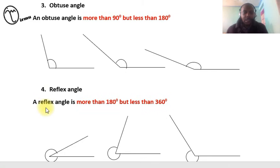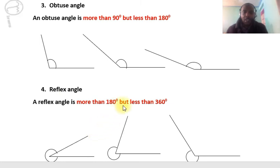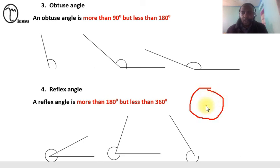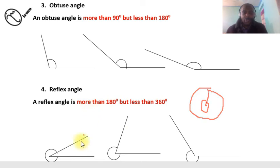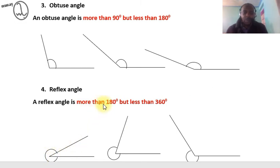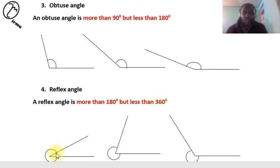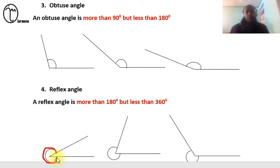Then we have the last type of angle, called the reflex angle — it is the largest. It is more than 180 degrees but less than 360 degrees. 360 degrees are the angles at a point or the angles formed in a circle. So a reflex angle is more than a straight line — which is 180 — but less than 360. You can see here it is the angle formed on the outside.